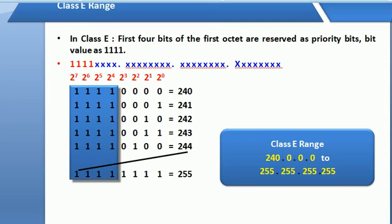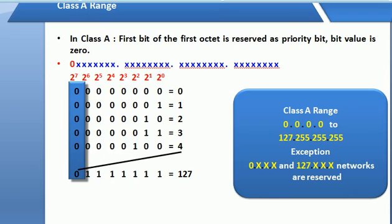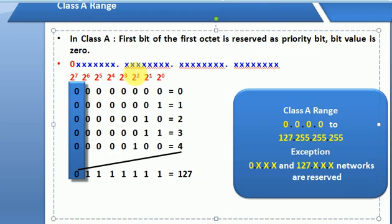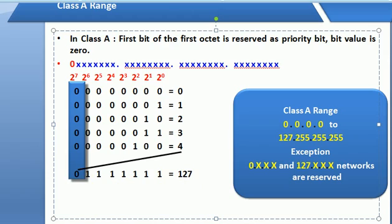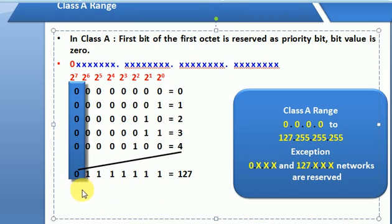To identify the class of an IP address, you look at the priority bits. In a 32-bit address, if the first bit is 0, that is a Class A address. This covers 0 to 127. If the first two bits are 1 and 0, that is Class B, covering 128 to 191.